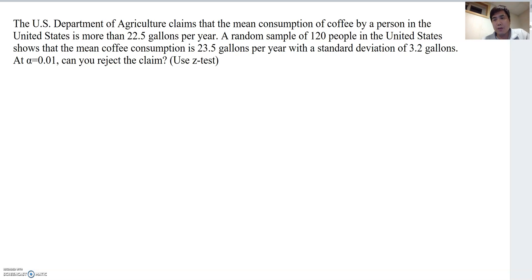Okay, so in this case, does this statement show one-tail or two-tail? If it is one-tail, then is it left tail or right tail? If you look at this phrase here, more than 22.5 gallons, it shows that one-tail and then right tail, because more than means going to the right side.